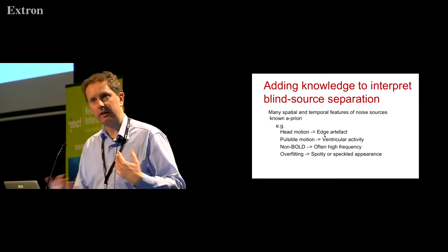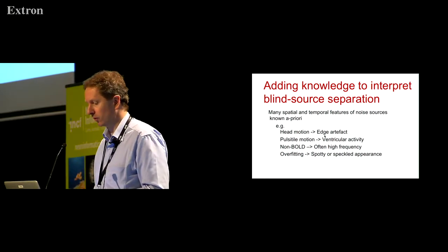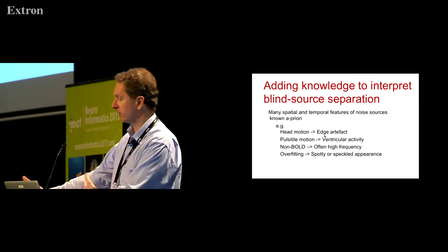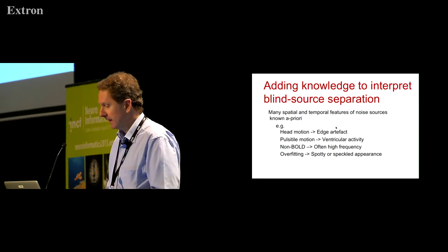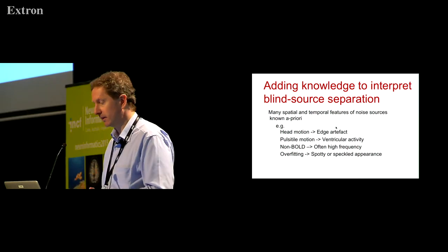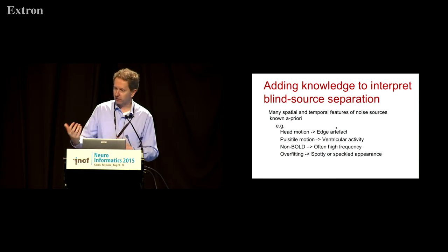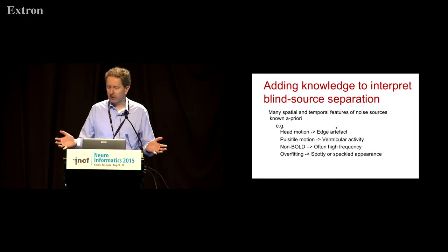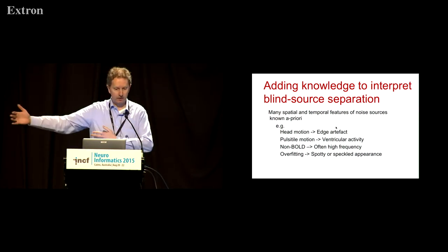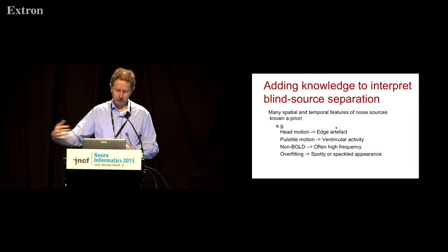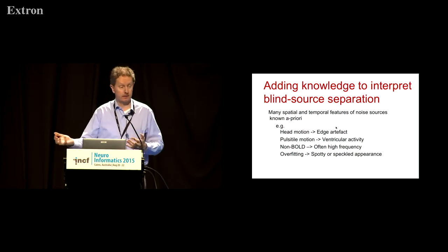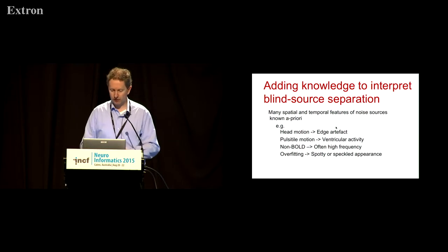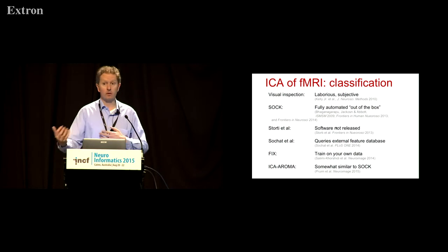So can we apply some a priori information to that post-hoc interpretation of data-driven methods? Can we do it in an automated and objective way rather than just a subjective interpretation of components? We know some things are going to pop out of an ICA from experience. If you've got head motion in functional MRI, you'll get edge artefact in resultant images. Pulsatile motion will show ventricular activity. The non-BOLD signal is often very broadband — higher frequencies than you'd expect from the hemodynamic response function. And if you overestimate model order, you get lots of spotty or speckled components which are non-physiological.